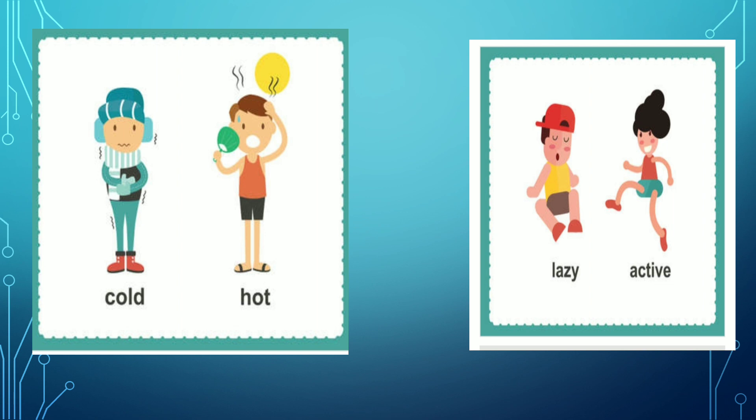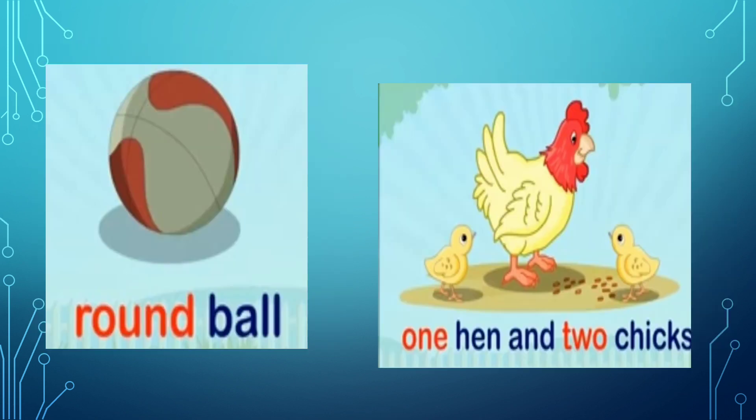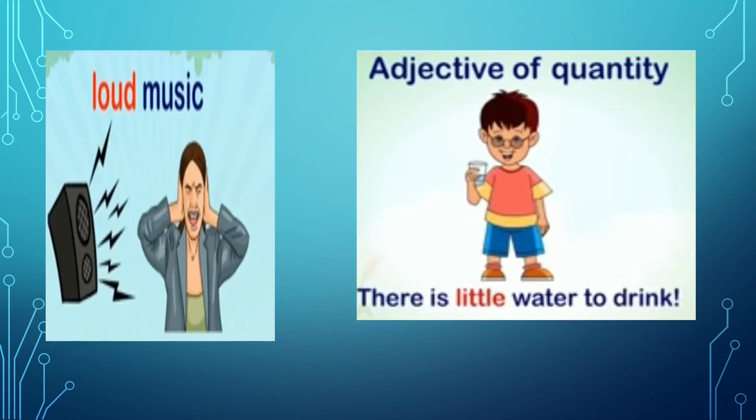Cold, hot, lazy, active — also adjectives. Round ball — here, round describes the shape of the ball. One hand and two cheeks — here, one and two show the numbers of the cheeks and hands, so numbers are also adjectives. Loud music — here, loud describes the sound of the music, so words under sound are also adjectives.